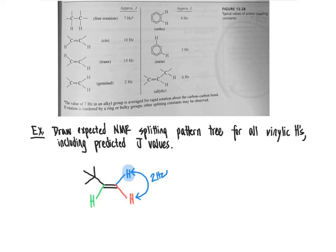That is a very small, narrow splitting. We use the 2 Hertz entry as the approximate J value for the geminal coupling. The proton in blue is also coupled to the one in green — and those two groups are trans to one another — so we predict their J coupling constant to be about 15 Hertz. So the blue proton is coupled to the red with 2 Hertz and to the green with 15 Hertz.